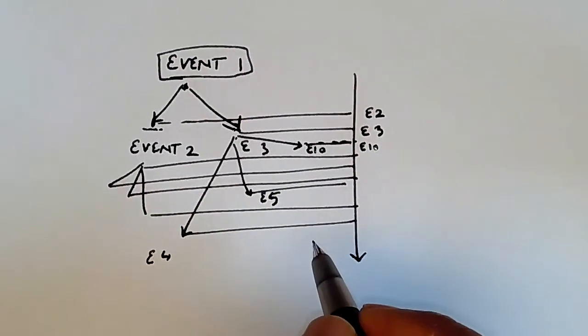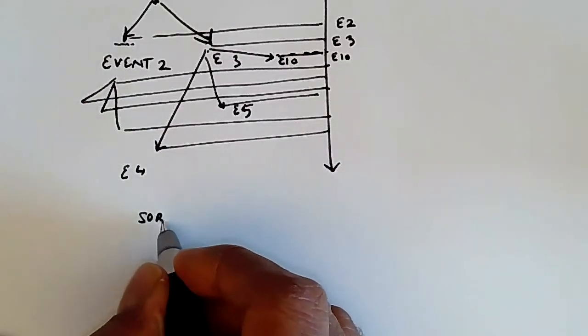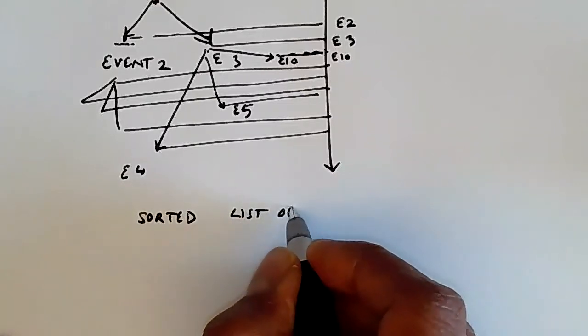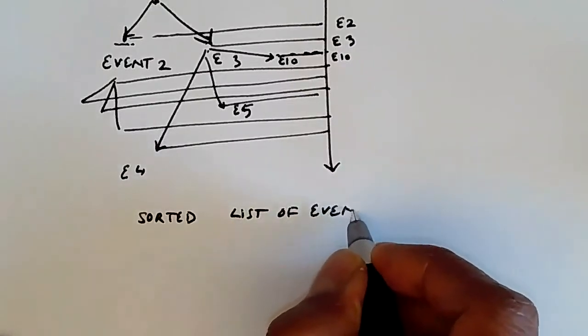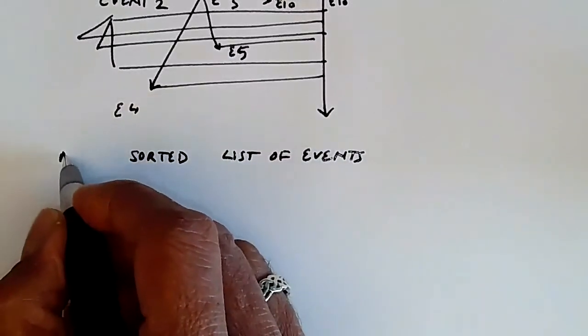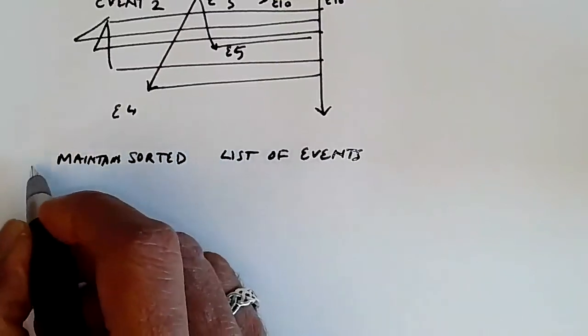With this discussion, it becomes very clear that what we really need to do is something like this. We have a sorted list of events. And what we do is we maintain this all the time. So we maintain a sorted list.